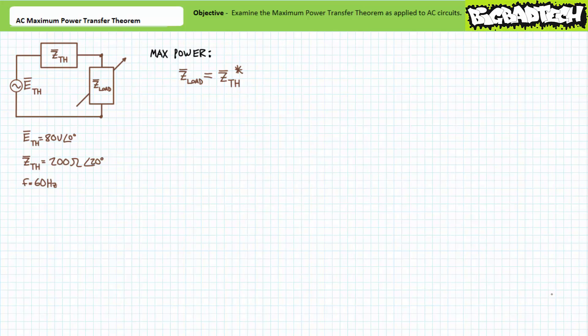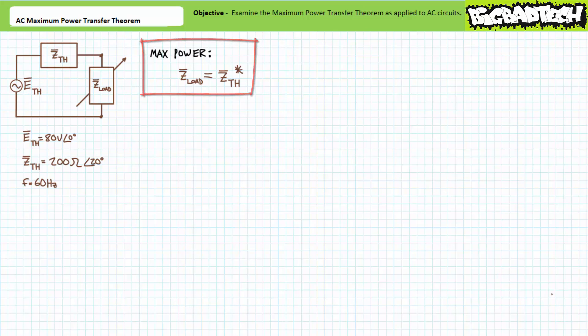If you recall, the maximum power transfer theorem as applied to DC circuits states that a variable load impedance will receive maximum power from a circuit when its resistance is equal to the Thevenin's equivalent resistance for that circuit. The maximum power transfer theorem applied to AC circuits is almost a direct repeat with a subtle twist: a variable load impedance will receive maximum real power from a circuit when its impedance is equal to the complex conjugate of the Thevenin's equivalent impedance. This is to suggest that maximum power is delivered to a variable load when Z_load equals Z_TH in magnitude but is opposite in angle.